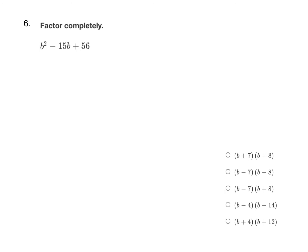For the x method, we want to find two numbers that multiply to c while adding to b. So setting up my x here, that would be multiply to positive 56 and add to negative 15.